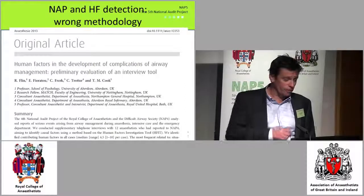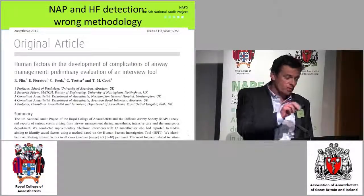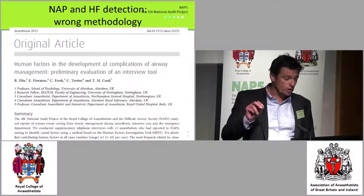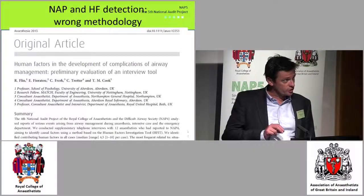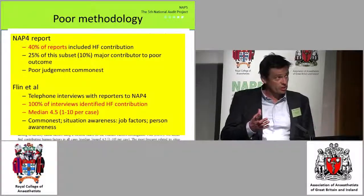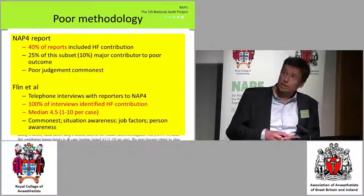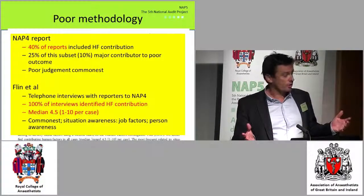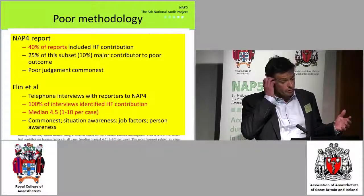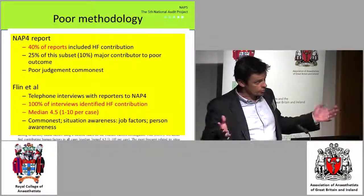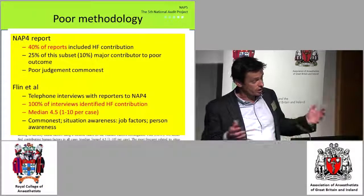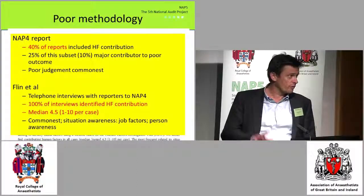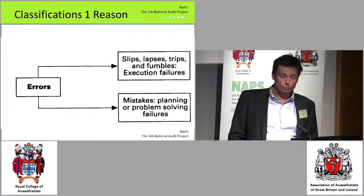After NAP4, in collaboration with the University of Aberdeen, Ronan Flynn and other psychologists spoke to 12 people who had reported cases to NAP4 and used a human factors investigation tool to explore the human factors contribution. In the NAP4 report, 40% of reports included human factors contributions, and in a quarter of them they were important. After investigating these 12 cases, 100% involved human factors, with an average of around five human factor issues per case. So whatever I tell you about human factors in NAP5, we've missed a lot of it.